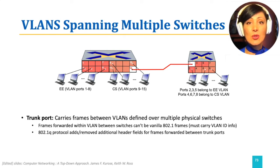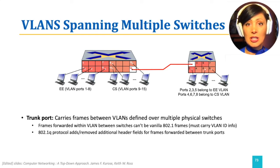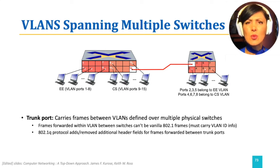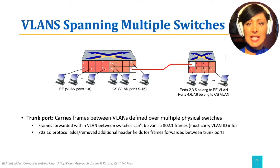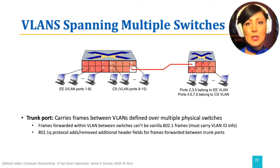This is performed using a VLAN ID. The frames forwarded across the trunk port carry a VLAN ID that identifies which VLAN they belong to. For example, on our first switch, VLAN ports 1 to 8 are used for electrical engineering and ports 9 to 15 for CS. Port 16 of the first switch is used as the trunk port to connect to port 1 of the second switch. On the second switch, ports 2, 3, and 5 are for the electrical engineering VLAN, and ports 4, 6, 7, and 8 are for the CS VLAN. When sending packets from the first switch to the second switch, frames are tagged with the VLAN ID so that, when they arrive at the second switch, it knows to which group of ports they belong.